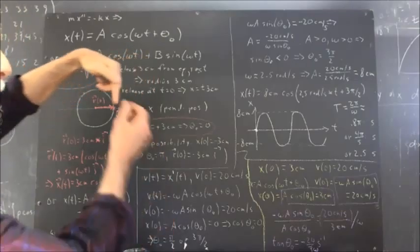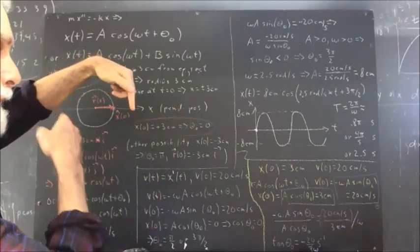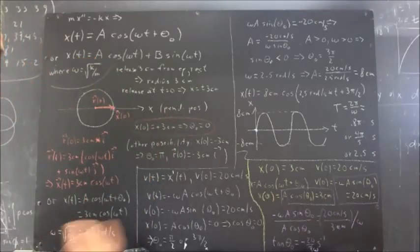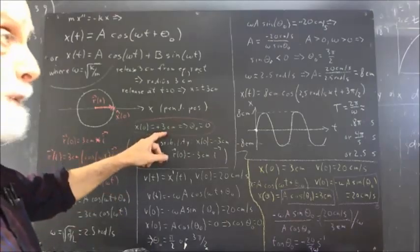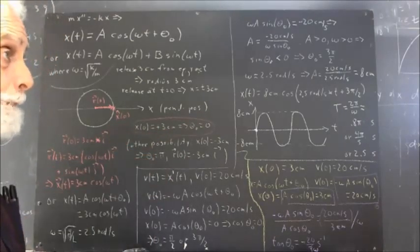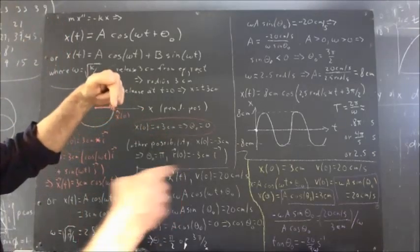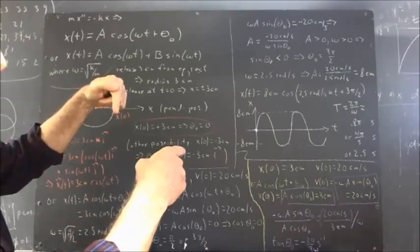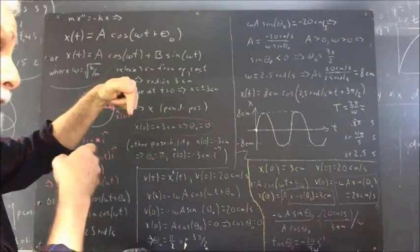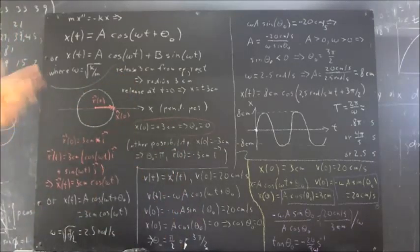Why? If we release a pendulum from rest three centimeters from equilibrium, by conservation of energy it's never going to be able to swing more than three centimeters from equilibrium. So three centimeters is your maximum distance from equilibrium through the whole cycle. On an ideal pendulum where you don't lose energy, you keep coming back to that three centimeter position and moving to the negative three centimeter position, back and forth forever in the ideal case.